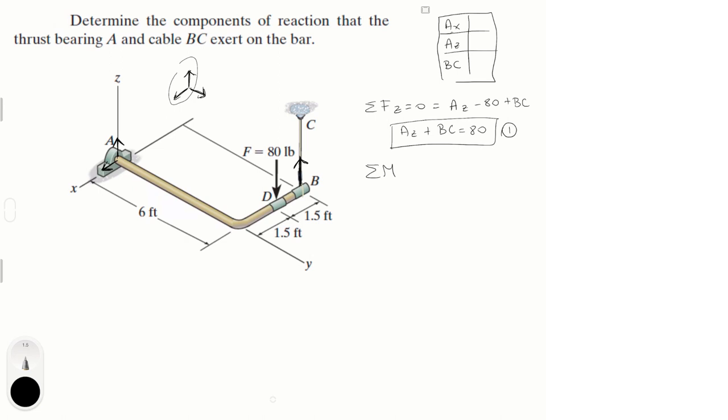Well, you got to notice something. If you do sum of moments about the X, you know that Az and Ax are not going to be doing anything. So the only other two forces are the other ones, but if you look at it, these two forces are not really creating any moment because of the way the thrust bearing is set up.